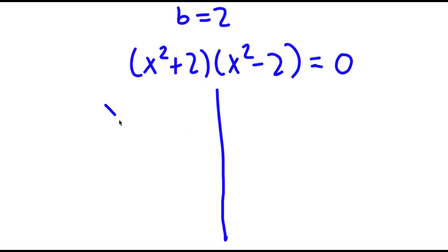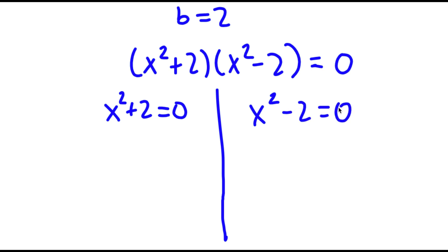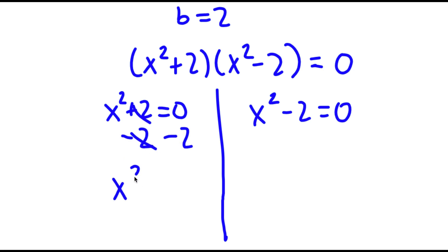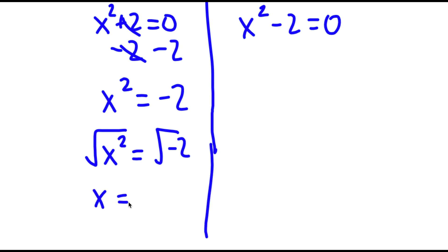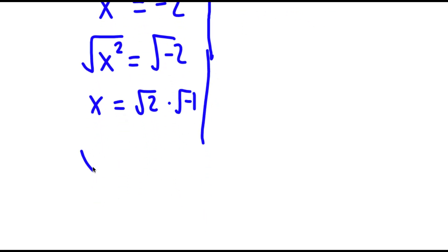So now this gives me two equations: x squared plus 2 equals 0, and x squared minus 2 equals 0. For x squared plus 2 equals 0, I can subtract 2 on both sides. These two cancel out, and I have x squared is equal to negative 2. To solve this, I'm going to take the square root on both sides. The square root of x squared is x, and the square root of negative 2 is the square root of 2 times the square root of negative 1. Since the square root of negative 1 is equal to i, I have x is equal to positive or negative square root of 2 times i.